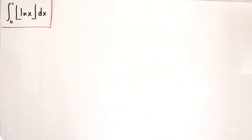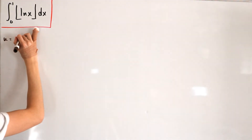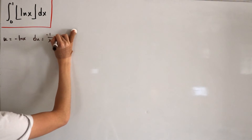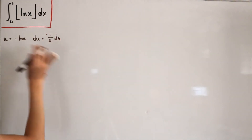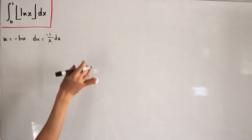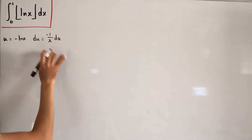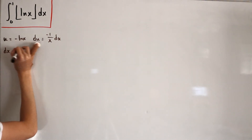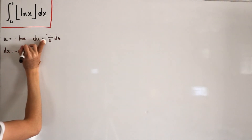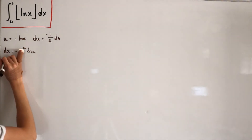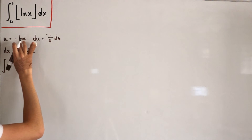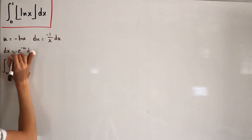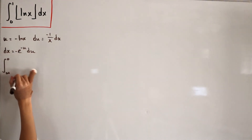For the u-substitution, let u = -ln(x). Differentiating both sides gives du = -1/x dx, so dx = -x du. Rewriting in terms of u, since x = e^(-u), we get dx = -e^(-u) du. Now plugging in the new bounds: at x = 0⁺, ln(0⁺) → -∞, so u → +∞; at x = 1, ln(1) = 0, so u = 0.